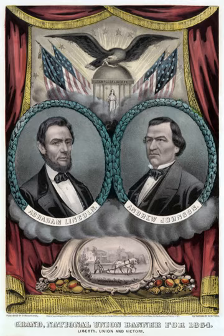Republicans loyal to Lincoln created a new name for their party in convention at Baltimore, Maryland during the first week in June 1864, in order to accommodate the War Democrats who supported the war and wished to separate themselves from the Copperheads. This is the main reason why War Democrat Andrew Johnson was selected to be the vice presidential nominee, as then-current Vice President Hannibal Hamlin was not nominated. The National Unionists supporting the Lincoln-Johnson ticket also hoped that the new party would stress the national character of the war.